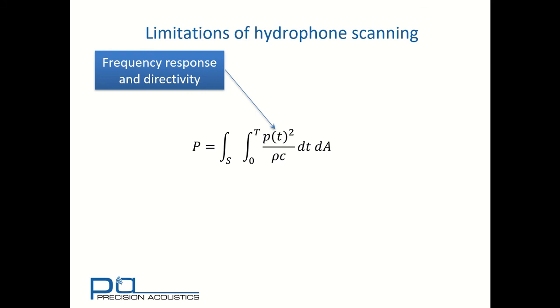If you're less familiar with these topics, there are additional PA tutorial videos on frequency response, directivity, and the conversion of voltage to pressure signals. That hydrophone will have a calibration uncertainty. This is typically at least 10% and often higher.